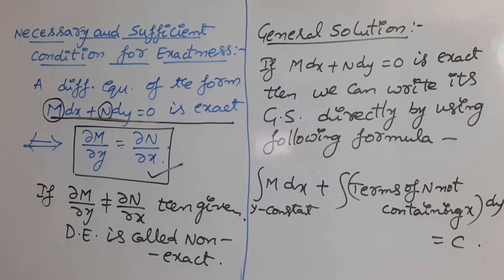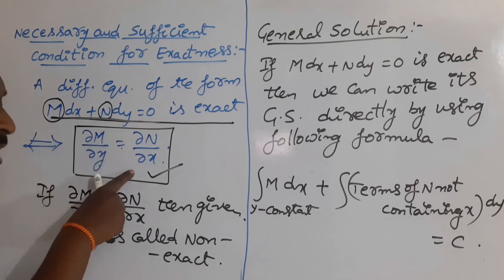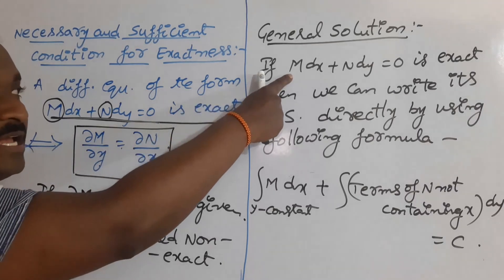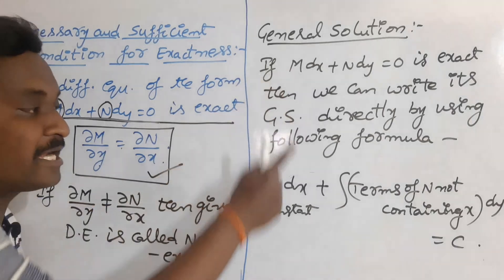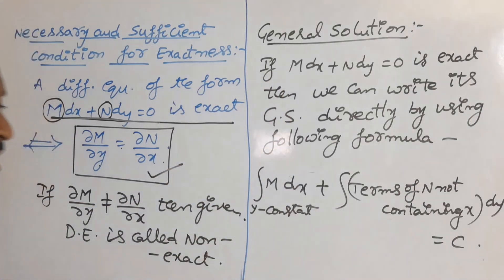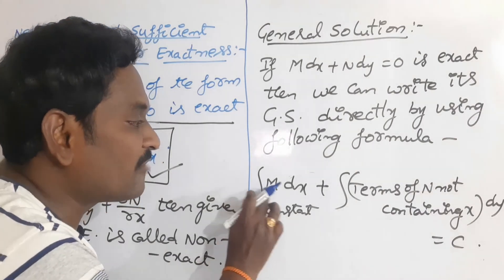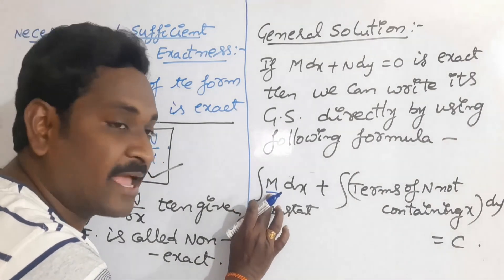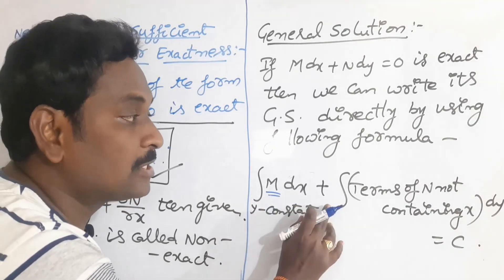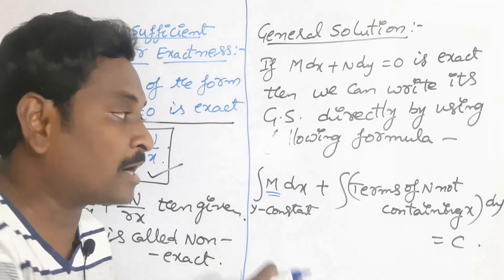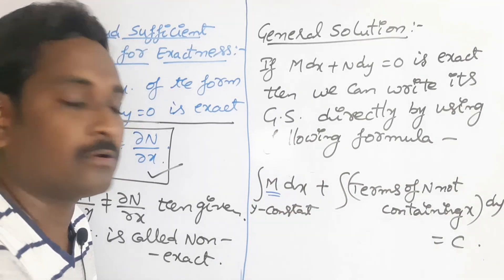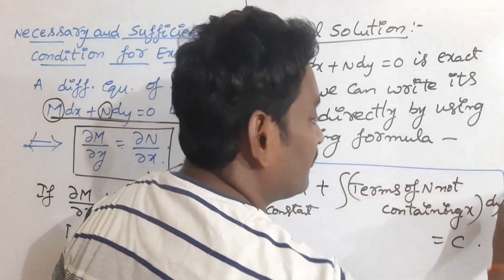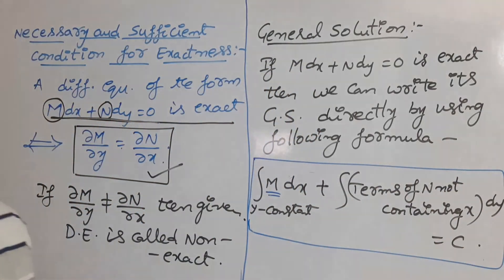This is the general solution formula for an exact equation. If we find that ∂M/∂y = ∂N/∂x, we immediately conclude the equation is exact and apply this formula. The first part is the integration of M dx — write all terms of M and integrate with respect to x. For the second part, do not write all terms of N; write only the terms of N which do not contain x, meaning only terms in y.